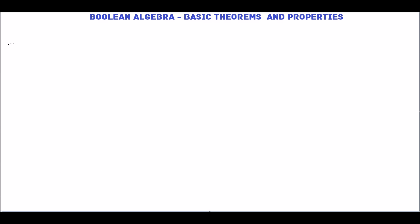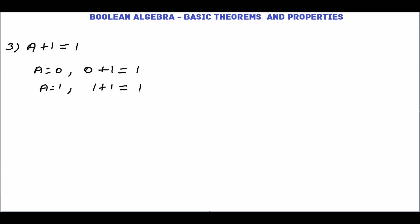The next theorem is a + 1 = 1. If a = 0, then 0 + 1 = 1, because in the logical OR operation 0 + 1 = 1. If a = 1, then 1 + 1 = 1. In a logical OR gate, if both inputs are 1 the output is 1. We will prove this.